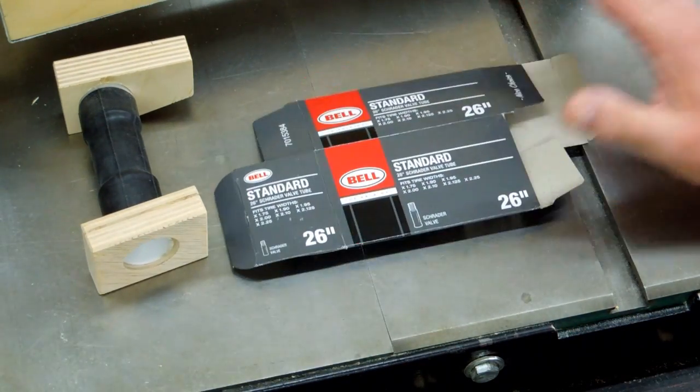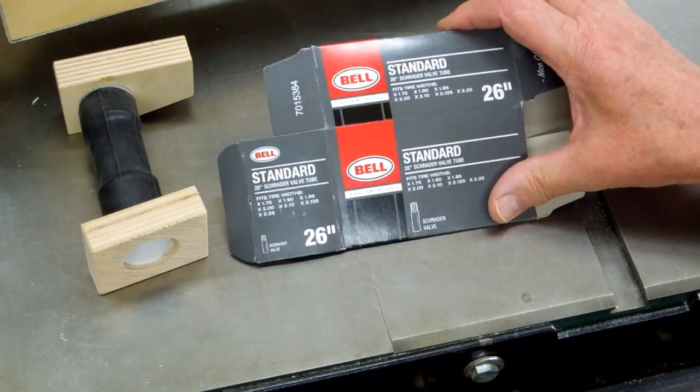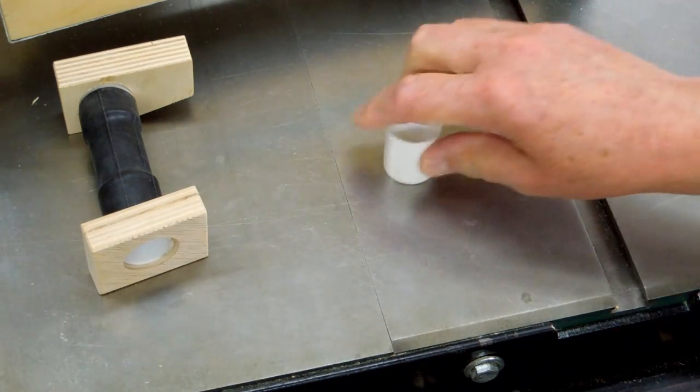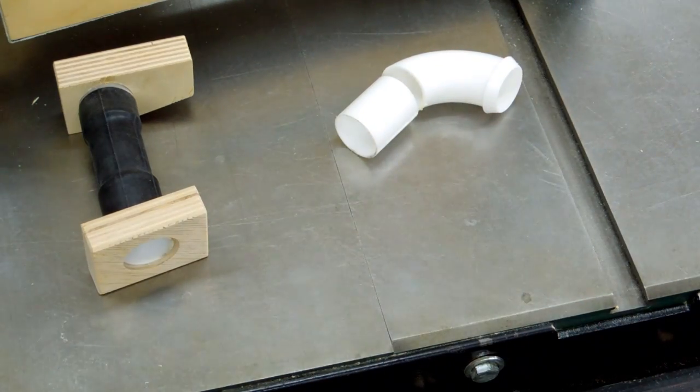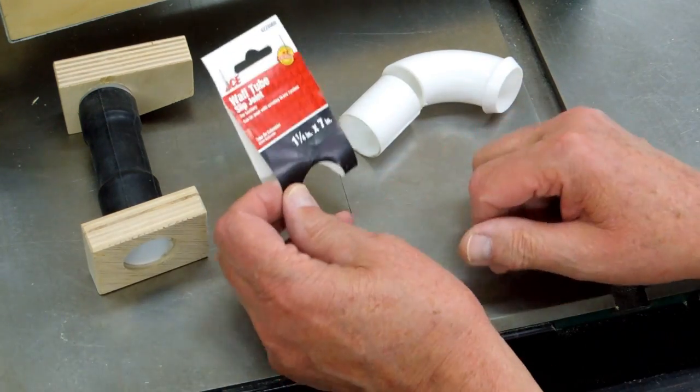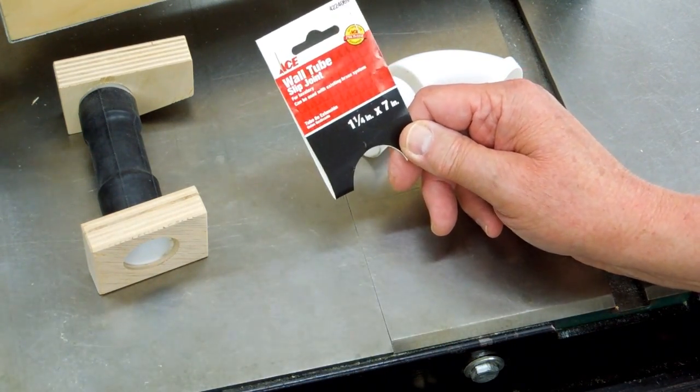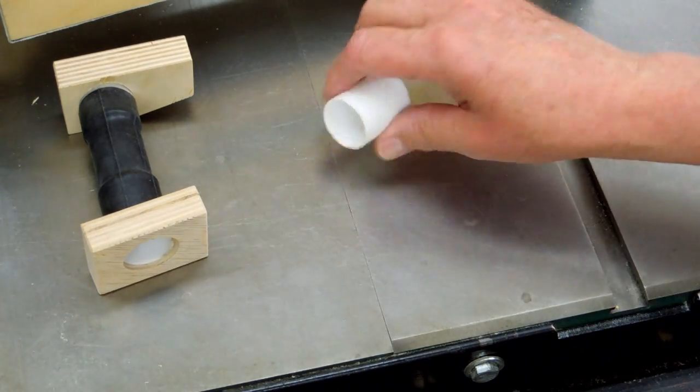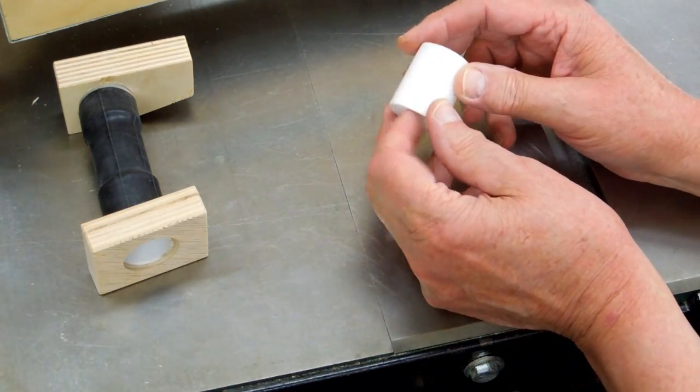The inner tube that I used, 26 inch, that's good for 1.75 to 2.25 diameter tires and I bought this at Walmart. This plastic pipe was cut off of a slip joint and it was about seven inches long and that came from the hardware store. It's just an inch and a quarter by a seven inch long slip joint. It's like what you use on your bathroom sink or in the kitchen sink. That's enough to make these connections for two organs. And I have cut that about an inch and a half long.